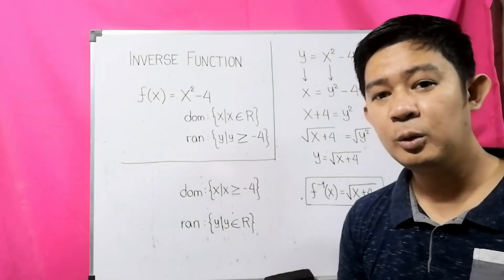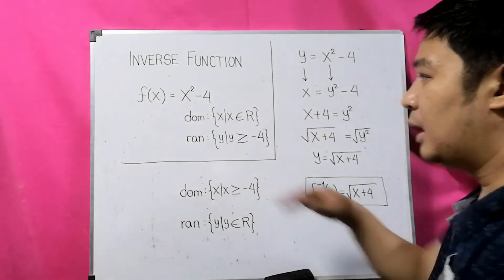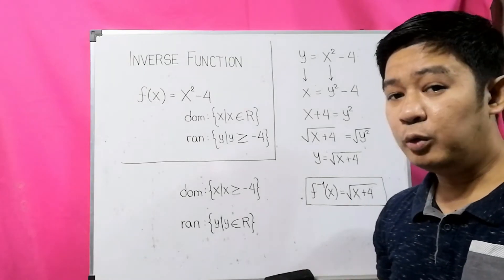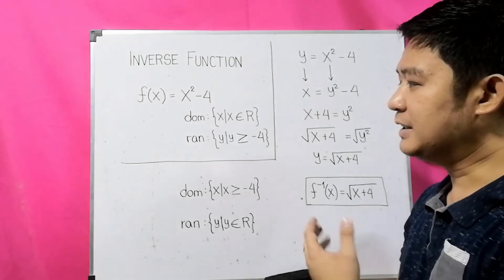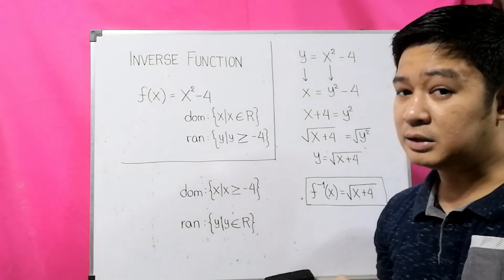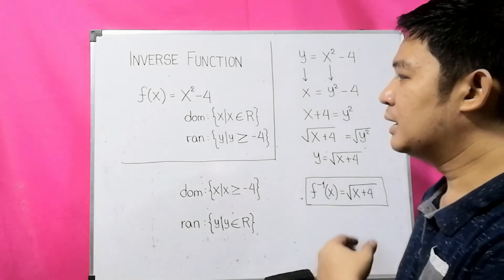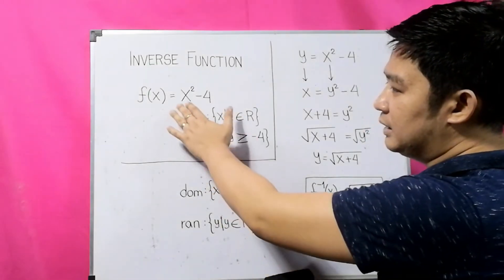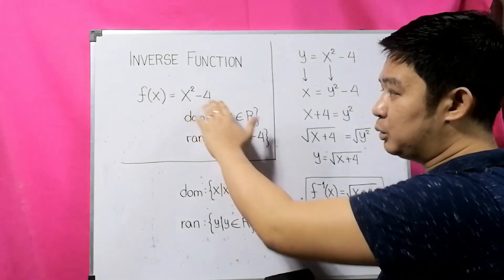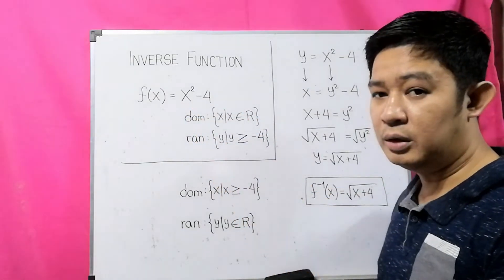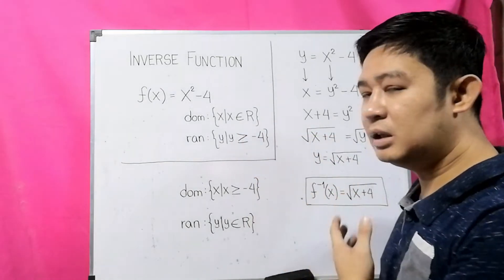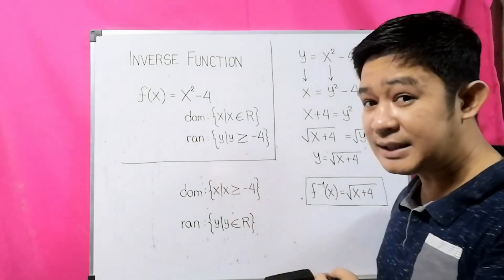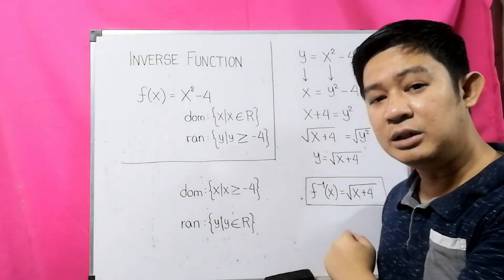For the next example, we have a quadratic function: f of x equals x squared minus 4. Before getting the inverse function, let us first determine the domain and range of our quadratic function. The domain is the allowable values for x. For x squared minus 4, we can use any real number as the value for x, so the domain is x such that x is any real number.